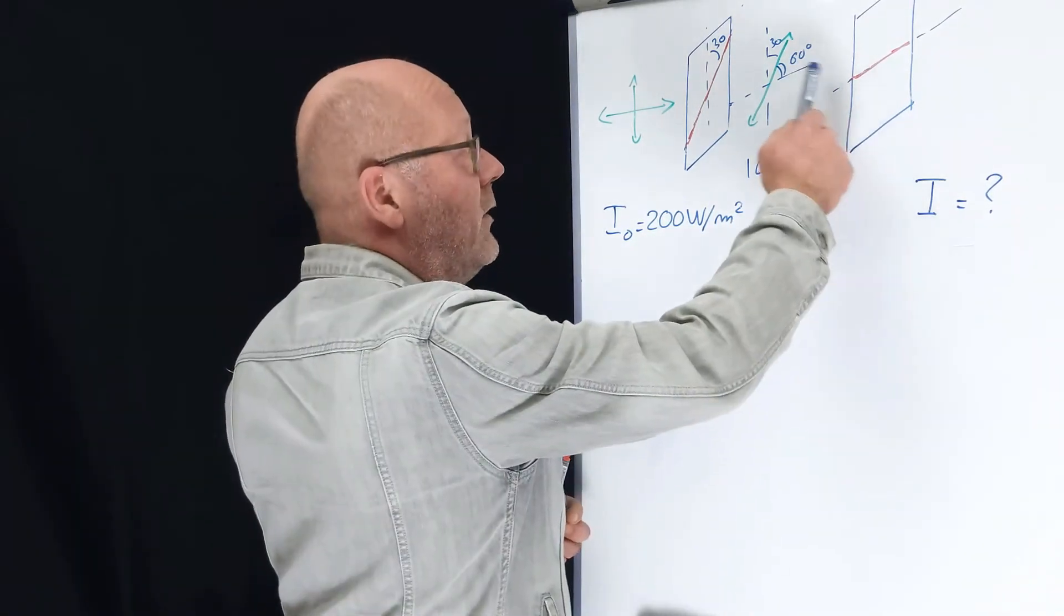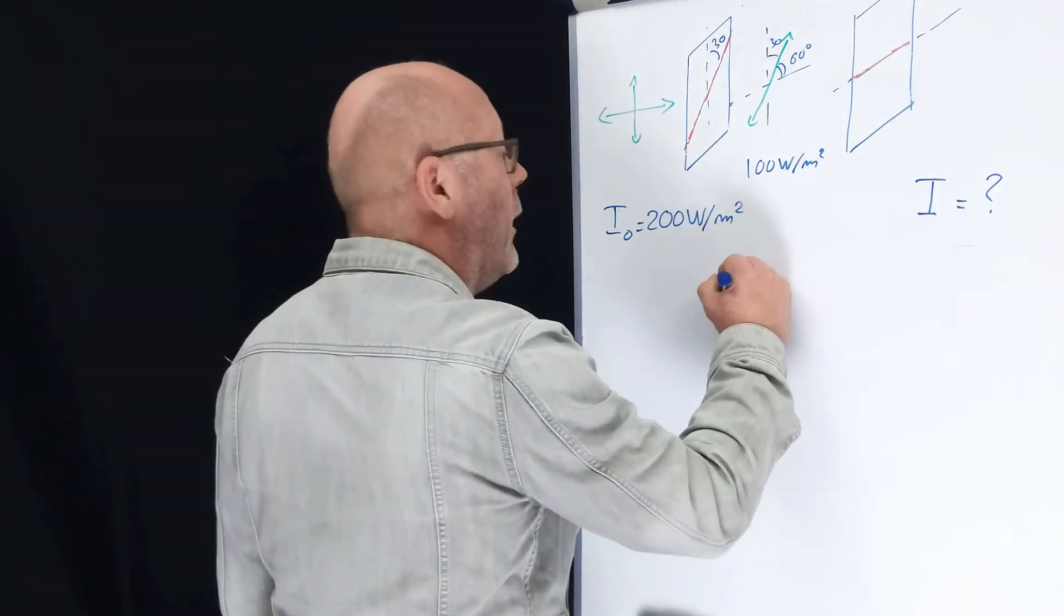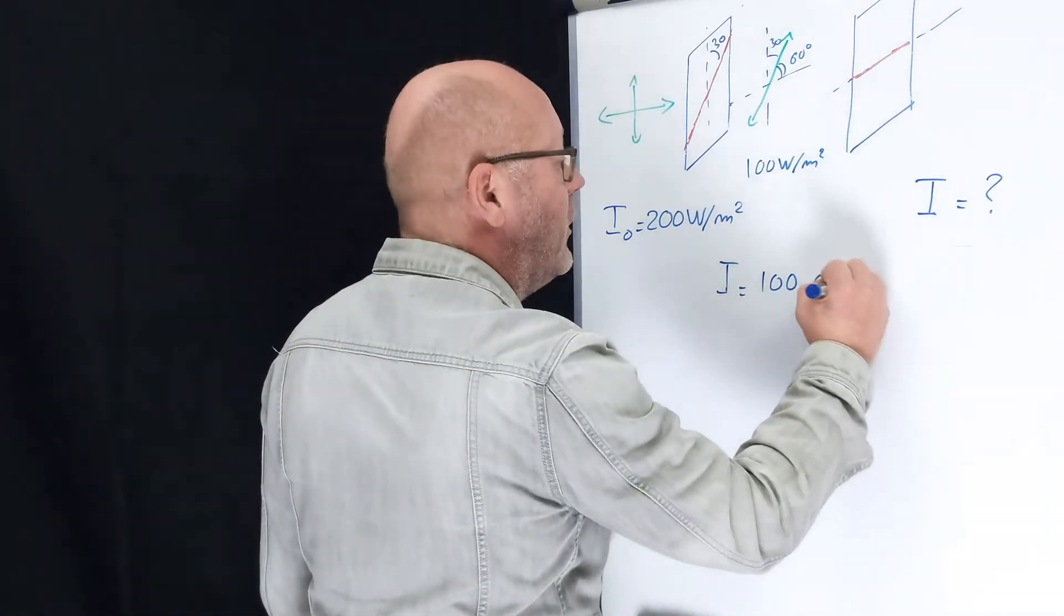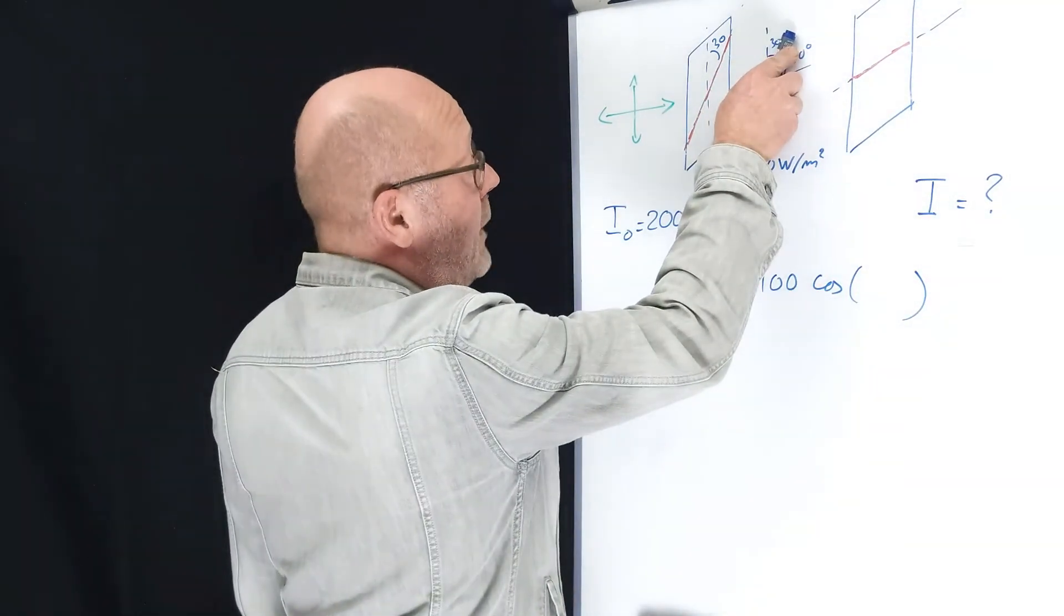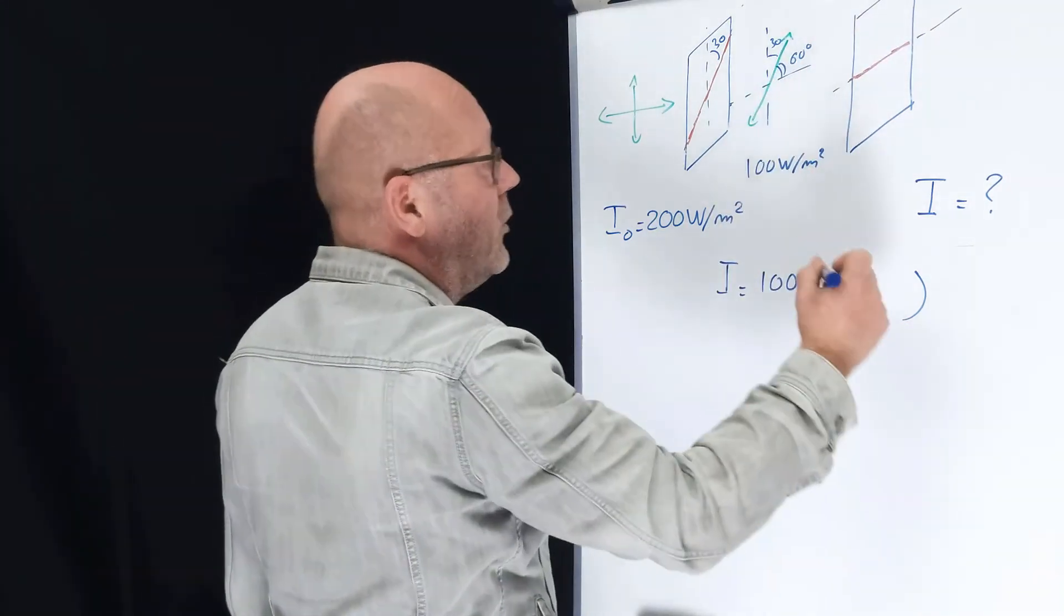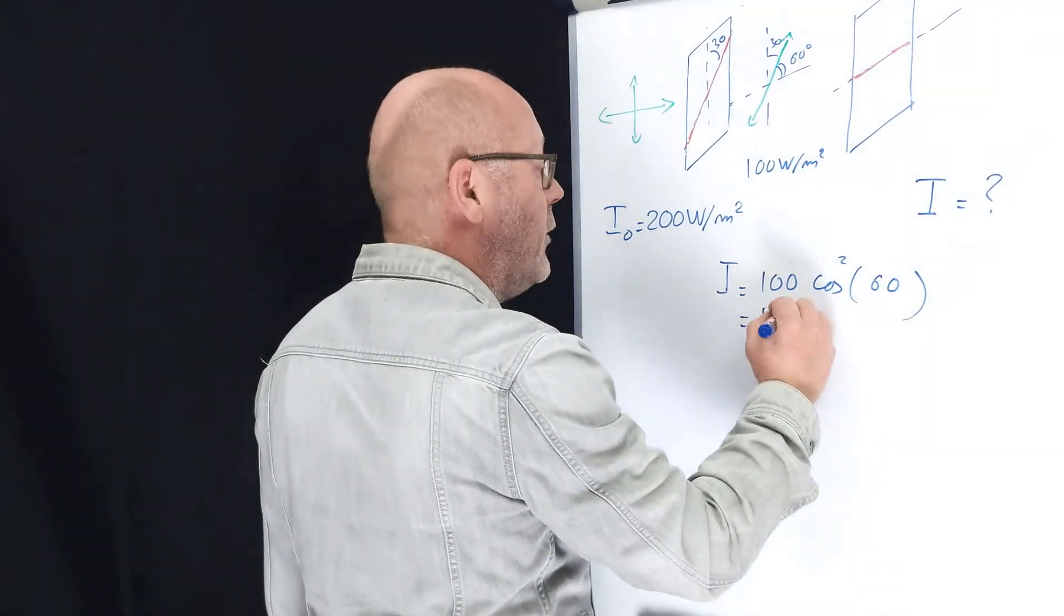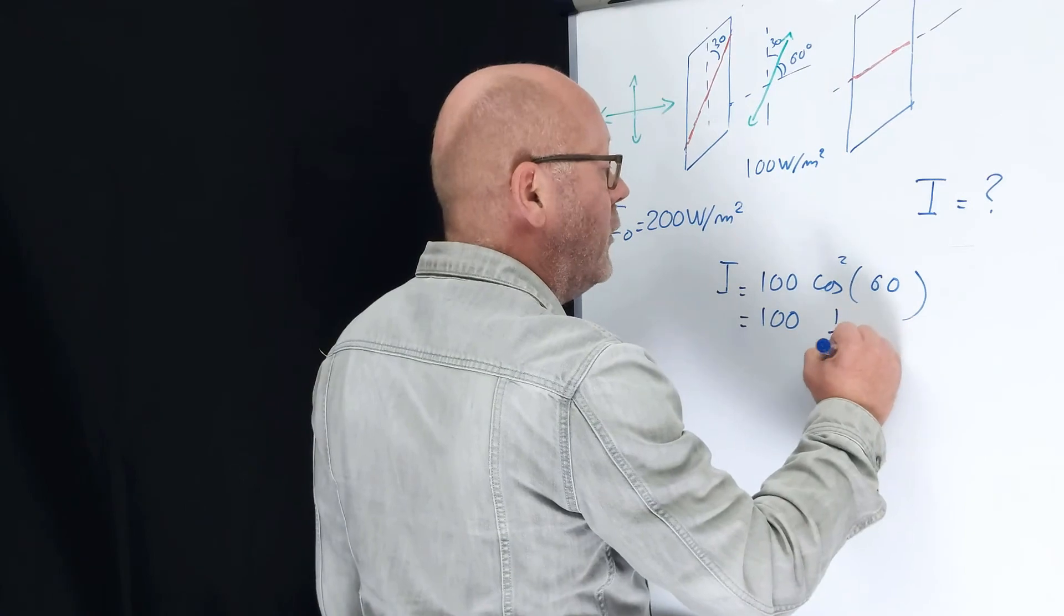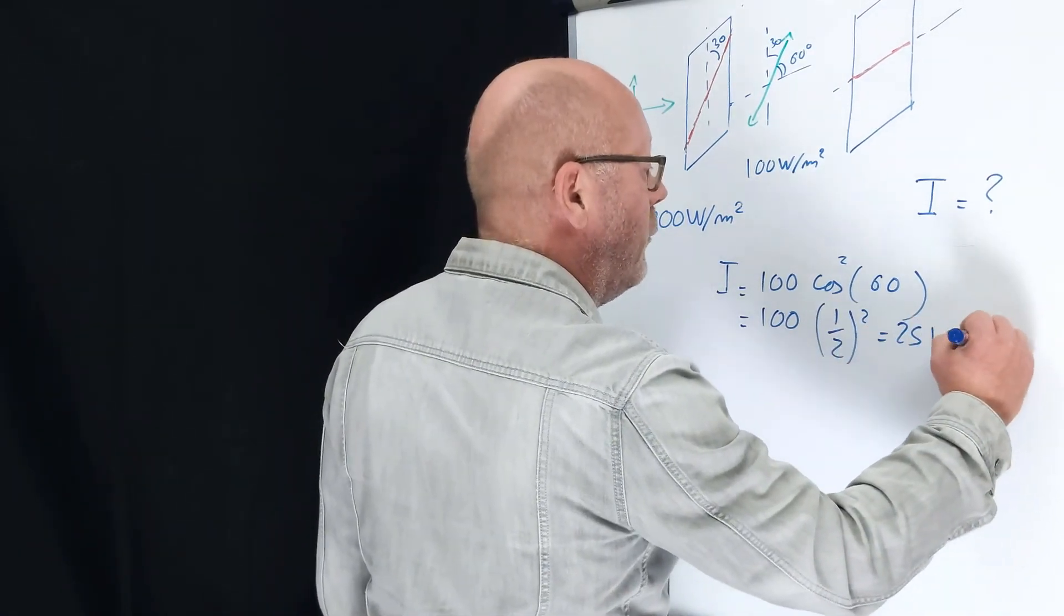For the second polarizer, you see that the incident beam is already polarized. So you can just apply Malus's law. I equals 100 cosine of the angle between the polarization plane of the light and the axis of polarization, so here 60 degrees, squared. So that is 100, cos of 60 is 1 half, 100 by 1 half squared, 25 watts per meter square.